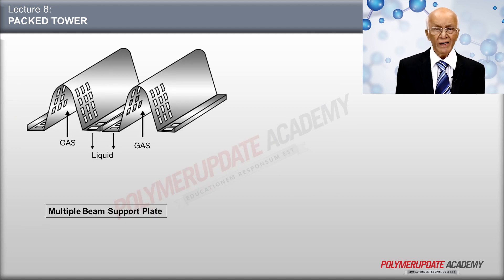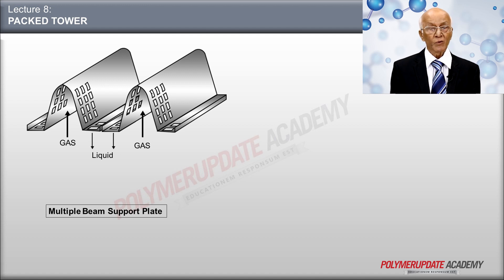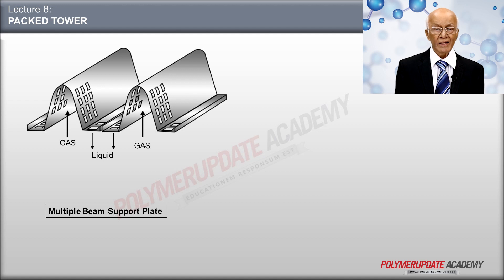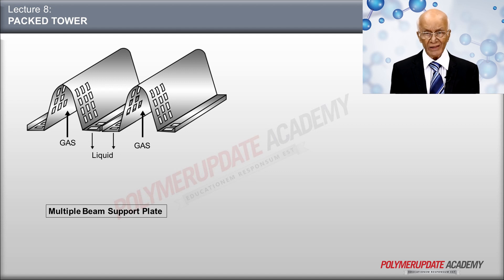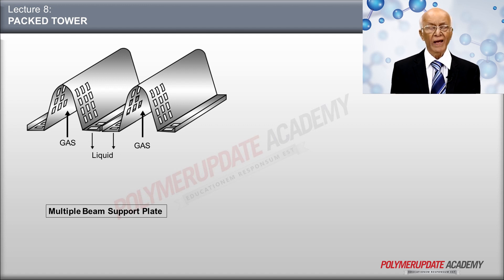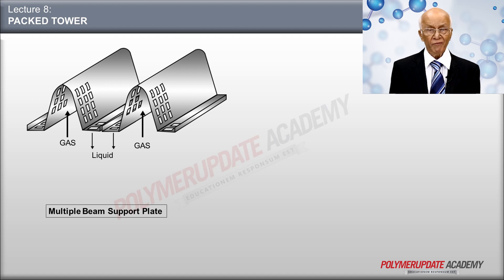From the figure, gas enters through the convoluted area of the packing support, whereas liquid leaves through the horizontal area of the packing support. Thus, they have different flow areas, allowing considerably large flow area for both gas and liquid. This arrangement prevents flooding from occurring at the packing support.